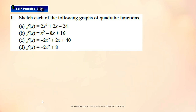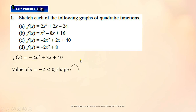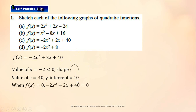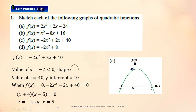For C, this is the function. Look at the value of A — we will sketch a set (n-shape) graph. The value of C is 40, so the y-intercept is equal to 40. Factorizing gives the values of x as negative 4 and 5. This is the graph.